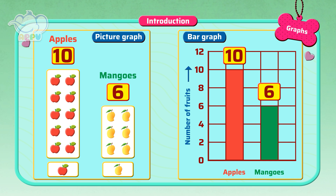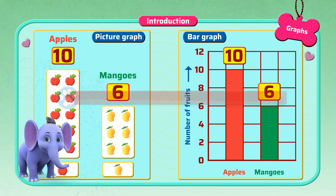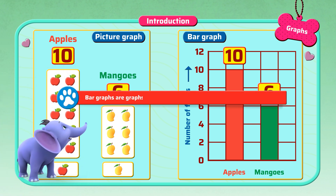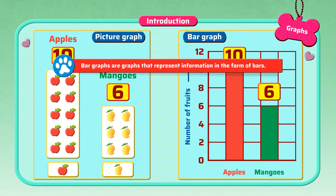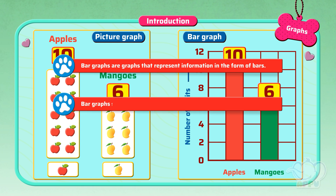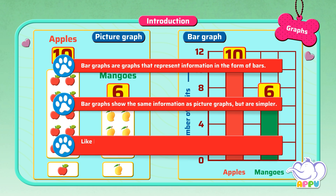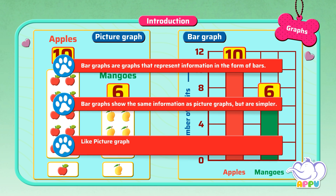These are different ways of representing data. Bar graphs are graphs that represent information in the form of bars. Bar graphs show the same information as picture graphs, but are simpler. Like picture graphs, bar graphs help in finding total, maximum, minimum, and for comparing quantities.